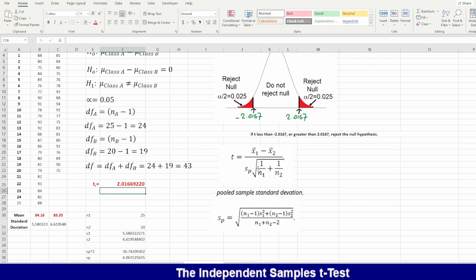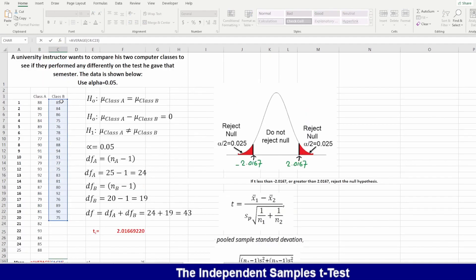Now to calculate t-test, I need to have the mean of both classes and the standard deviation for both classes so I can calculate the t-test. First here, I will calculate the average. I'll say equals to average, then I will select my data, enter, give me the report. The same I will do with class B.